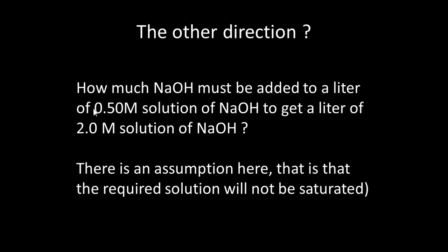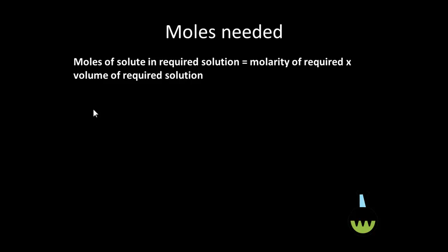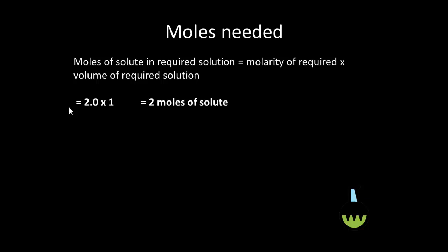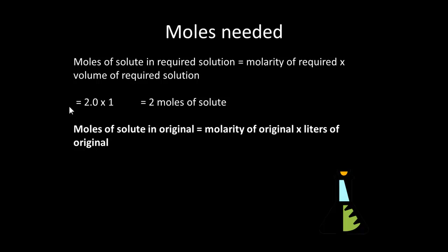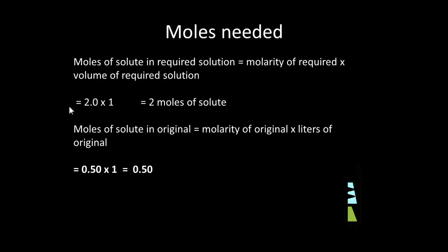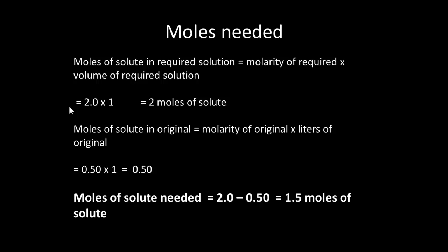What if we want to go in the other direction? How much sodium hydroxide do we need to add to 1 liter of 0.5 molar solution to get 1 liter of 2 molar sodium hydroxide? One assumption is that the required solution will not be saturated. Moles needed in the required solution: 2 molar times 1 liter equals 2 moles. Moles in the original: 0.5 times 1 equals 0.5 moles. So we need 2 minus 0.5, which is 1.5 moles of solute.